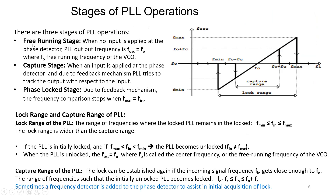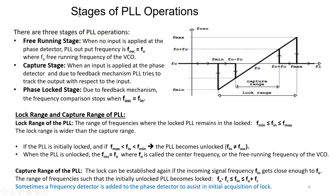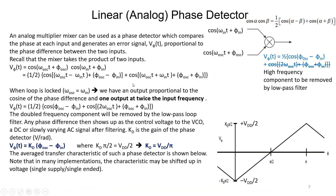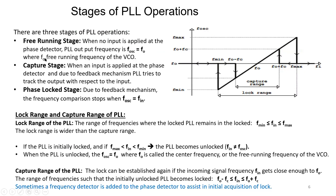There are three stages of PLL operation. The first is the free running state: when no input is applied at the phase detector, the PLL output frequency is f_osc, which equals f_o — the free running frequency of the VCO.